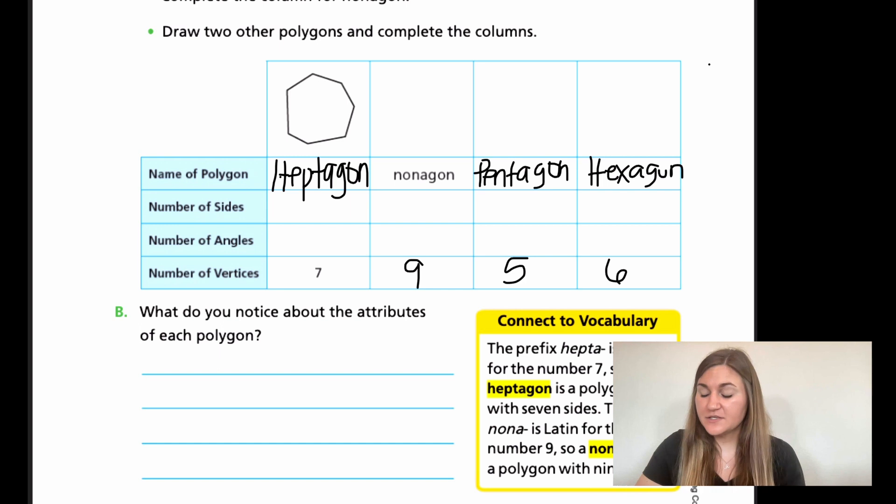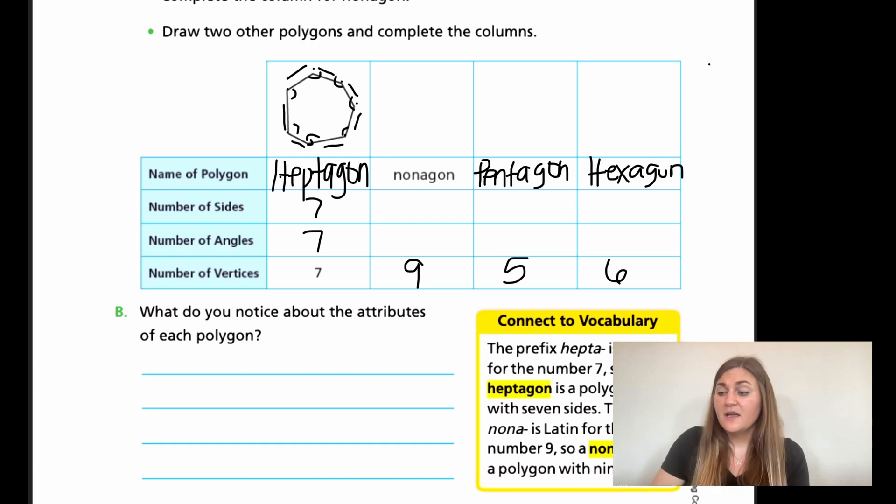All right, let's go and finish this together. So for the heptagon, it does have seven vertices, which is showing one, two, three, four, five, six, seven. Then they want to know how many sides. So it shows one, two, three, four, five, six, seven. So it does have seven sides. And then for the angles on the inside, it would be one angle here, two, three, four, five, six, seven. So it also has seven angles.